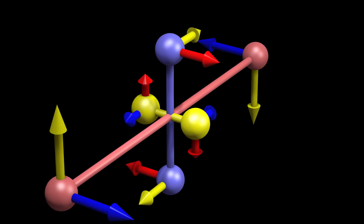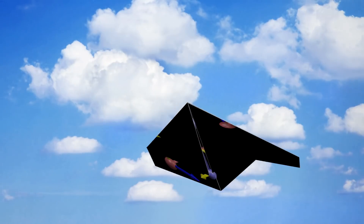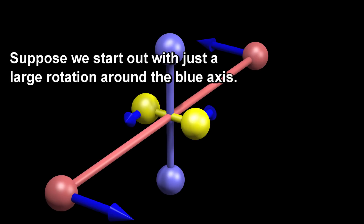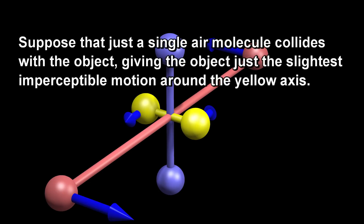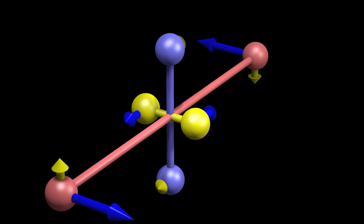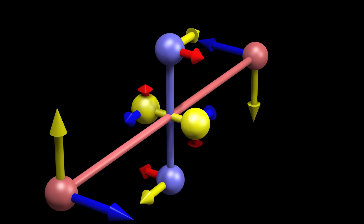Note that this rotation around the yellow axis is in the same direction as in our previous example. We can now address the question of why rotation around the intermediate axis is unstable. The intermediate axis is the blue axis. Suppose we start out with just a large rotation around the blue axis, and a single air molecule collides with the object, giving it just the slightest imperceptible motion around the yellow axis. The rotation around the yellow axis will interact with the rotation around the blue axis to start a rotation around the red axis, which will then increase the rotation around the yellow axis even more, which will then increase the rotation around the red axis even more, and so on.